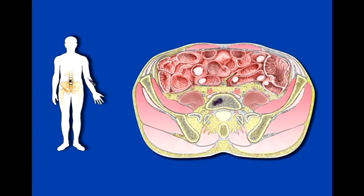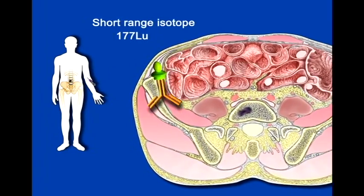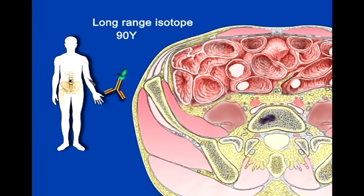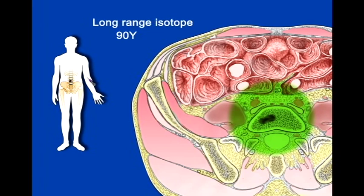We can utilize different properties of different radioisotopes. For example, lutetium-177, or 177-Lu, is a short-range isotope that is effective in small tumors. In comparison, yttrium-90, or Y-90, is a longer-range isotope that may be better for bigger tumors. However, if utilized in a small tumor, there is extra radiation that then might damage normal tissues.